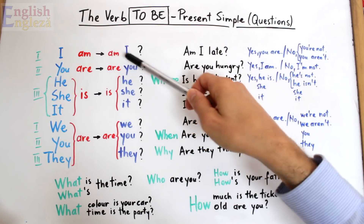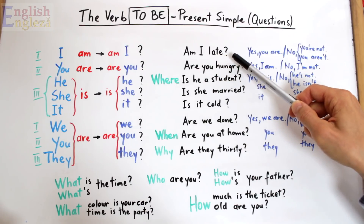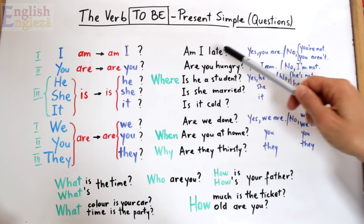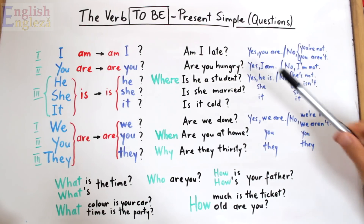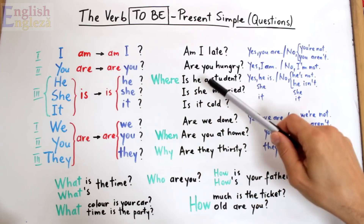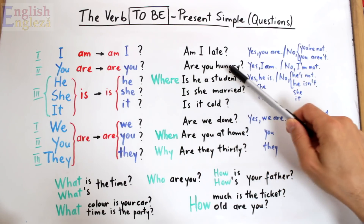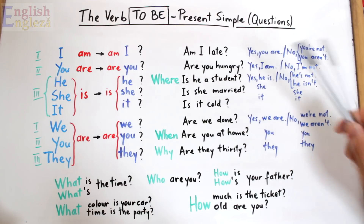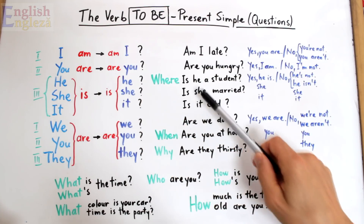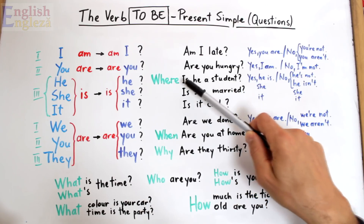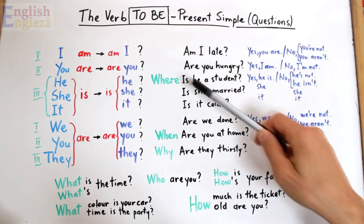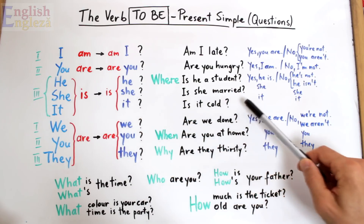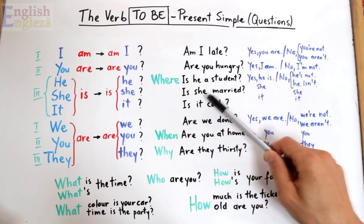Am I late? — Sunt eu târziu, cu sensul am întârziat. Apoi, pentru pronumele you, tu: Are you hungry? — Ești tu înfometat, cu sensul îți e foame. Apoi, pentru he, el: Is he a student? — Este el un student, cu sensul este student. Apoi, pentru she, ea: Is she married? — Este ea căsătorită.